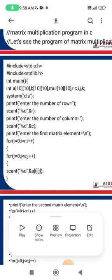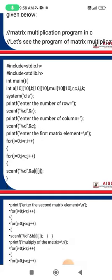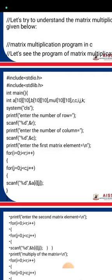Next, system("cls") clears the screen. Then printf asks the user to enter the number of rows, and scanf reads that value into r using %d. The next line prints a prompt to enter the number of columns, and scanf reads the column count into c using %d.